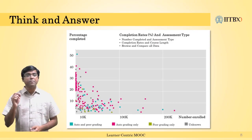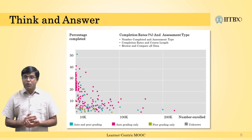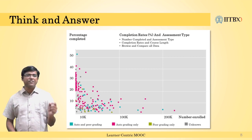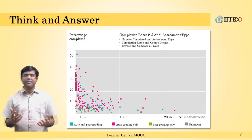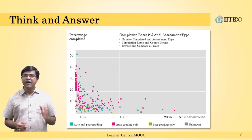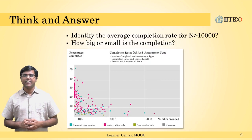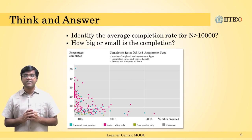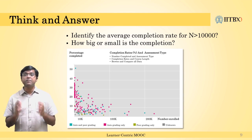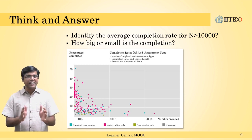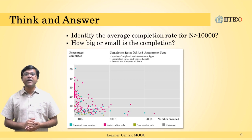Let us pause for a minute and examine this graph more carefully to see what exactly the problem is and one of its key implications for instructors. The X axis shows the number of people enrolled in the course and the Y axis shows completion rates. Let us focus on all courses with enrollment greater than 10,000 learners. Can you identify the completion rate region where you see the maximum concentration of data points, and calculate how large or small that number actually is?